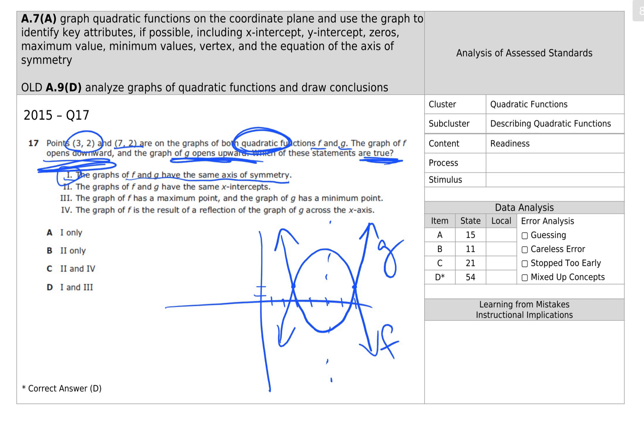The graphs of F and G have the same x-intercepts. Well, that is not true. They all cross at different places, so 2 is not a correct answer. 3, the graph of F has a maximum point. Here's F. It does have a maximum. And the graph of G has a minimum. Here's G. It does have a minimum. Roman numeral 3 is correct. And the graph of F is a result of a reflection across the x-axis. Well, that is not true. If we were to reflect that, fold it down, they would not match on each other. So the answer includes Roman numeral I and 3, 1 and 3. The answer is D.